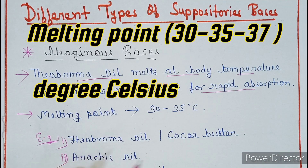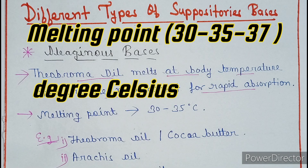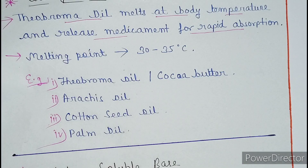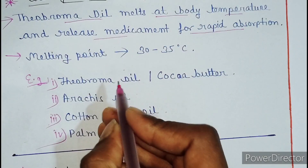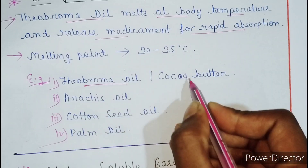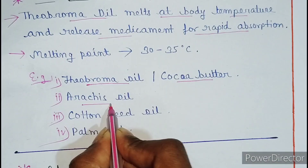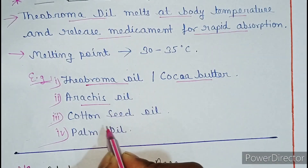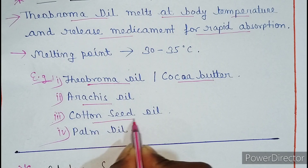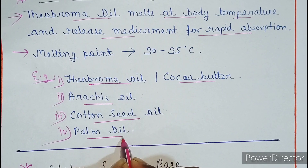The melting point of oleaginous bases is 35 degrees Celsius. The examples of oleaginous bases are: theobroma oil, cocoa butter, arachis oil, cotton seed oil, and palm oil.